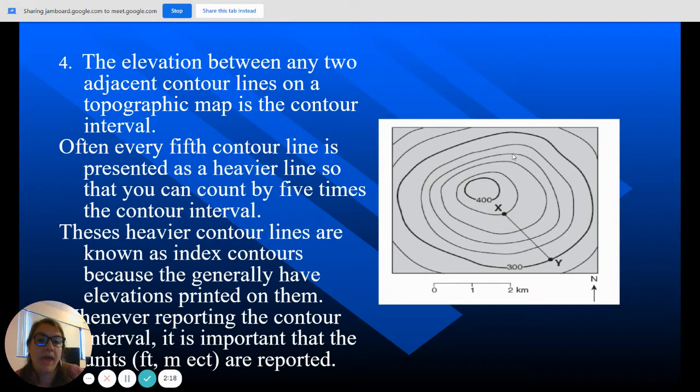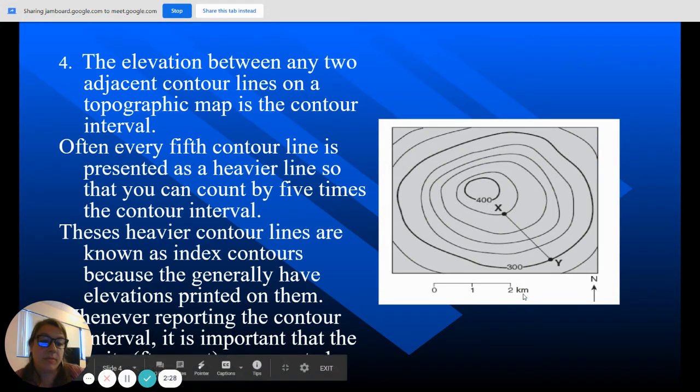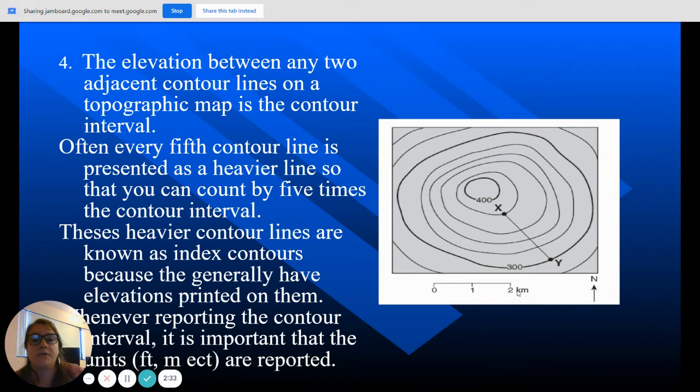So the contour interval for this map would be 20, it's probably feet in this case. Usually it's written on there. Actually no, it would be meters because this is kilometers. Because feet and kilometers don't go together. Meters and kilometers do.